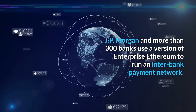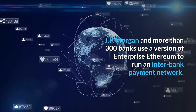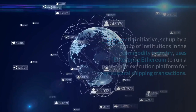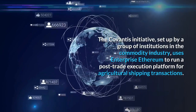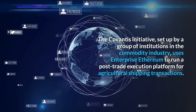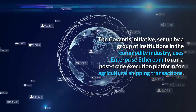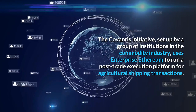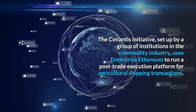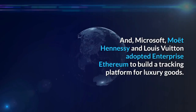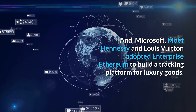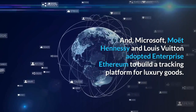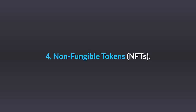JP Morgan and more than 300 banks use a version of Enterprise Ethereum to run an interbank payment network. The Covantis initiative, set up by a group of institutions in the commodity industry, uses Enterprise Ethereum to run a post-trade execution platform for agricultural shipping transactions. Microsoft, Moët Hennessy, and Louis Vuitton adopted Enterprise Ethereum to build a tracking platform for luxury goods.